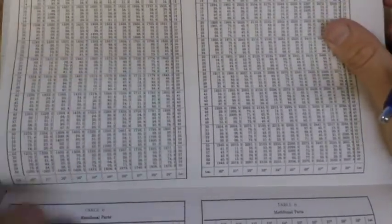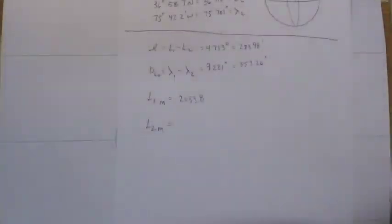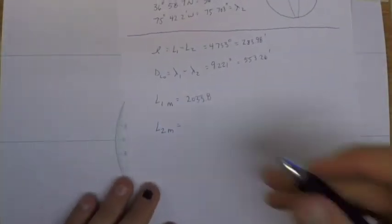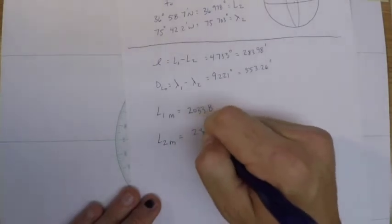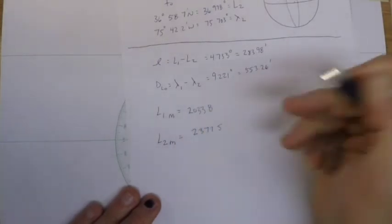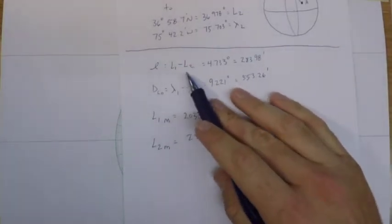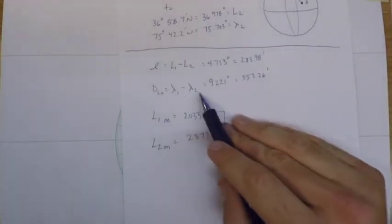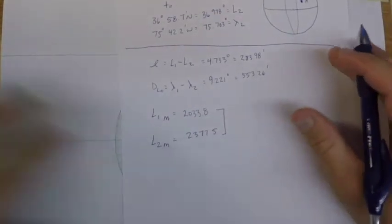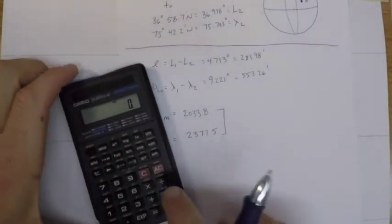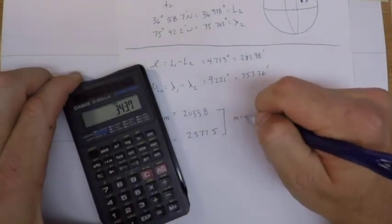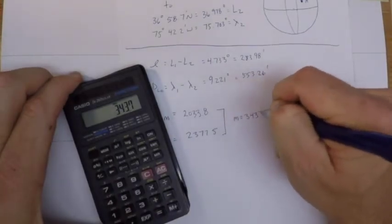And for latitude two, which was 36° 58', so again I'll mentally interpolate those, and I get 2377.5. So just like the previous where I had to do the difference between the latitudes and the longitudes, I have to do the difference between the meridional parts. So I'll subtract these and I get my m value is going to be 343.7.